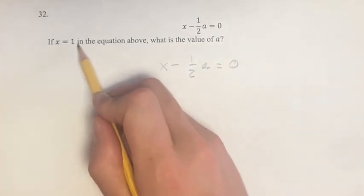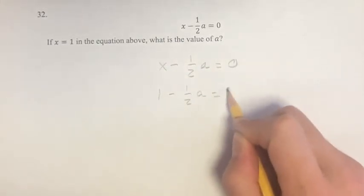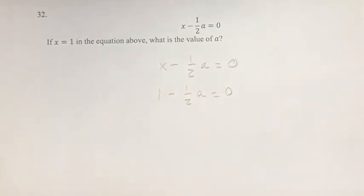It's a pretty simple problem. We just have to plug in 1 for x. So x becomes 1 minus 1 half a is equal to 0. And now we can just solve this equation for a.